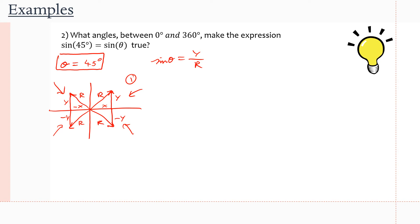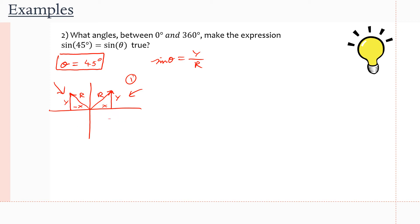We know these are the quadrants giving the same ratio as sine of 45°, because the principal angle will be positive. Sine of the principal angle equals plus or minus the related acute angle — and we just need where it's positive. The related acute angle is always evaluated with positive side lengths. But sine of the principal angle depends on the direction — negative Y means negative sine. So we'll work in quadrant one and quadrant two only.